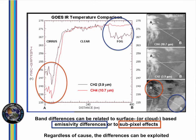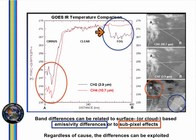Clouds do emit 11 micron radiation more as black bodies, so the inferred brightness temperature won't be so cold. In this cross-section from a fog bank to a cirrus stick, you see brightness temperature differences over the fog that are related to emissivity differences in the cloud, so that the 3.9 micron brightness temperature is cooler than that at 10.7.